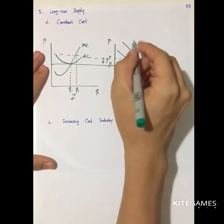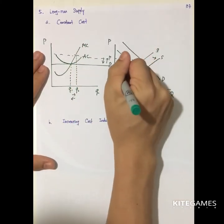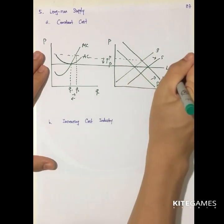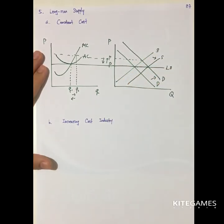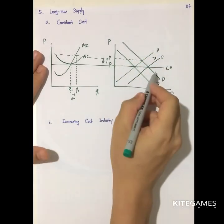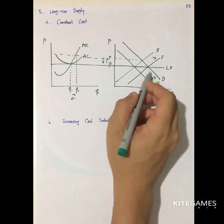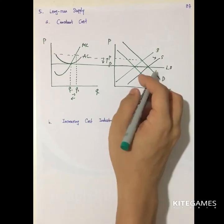So the long-run supply curve is horizontal here. The long-run supply curve represents the response of output when demand changes.